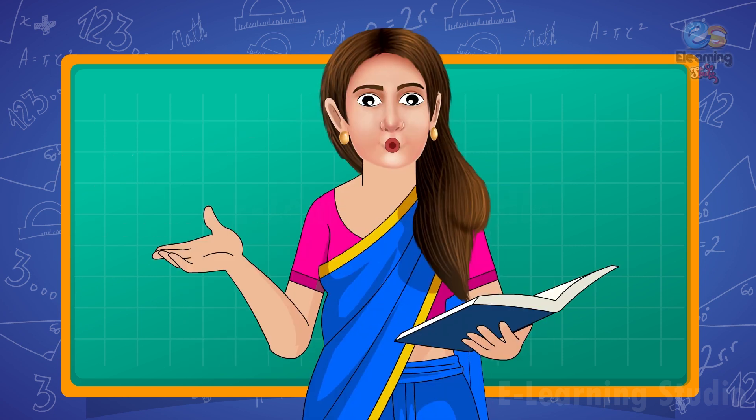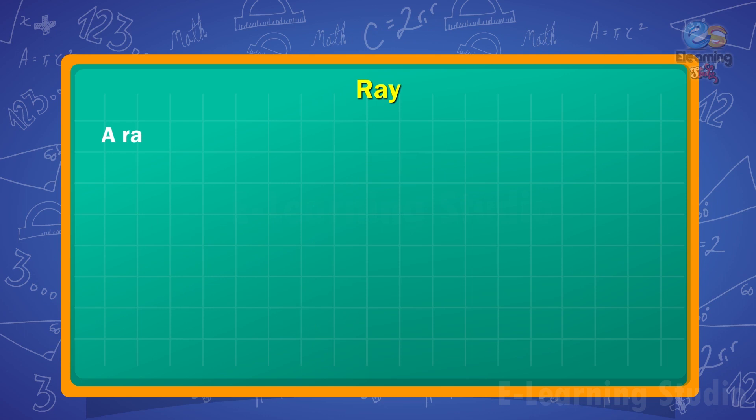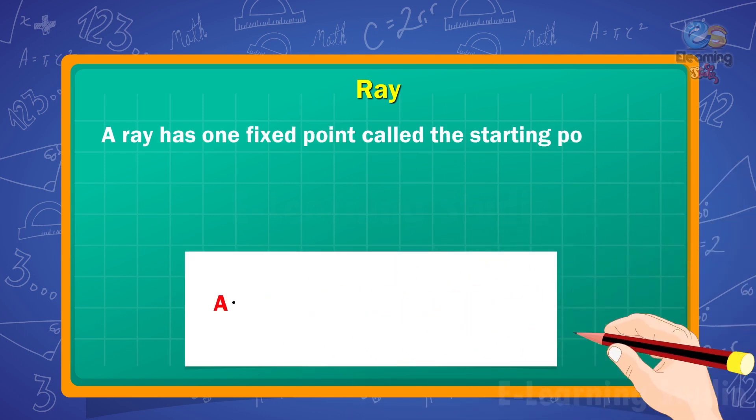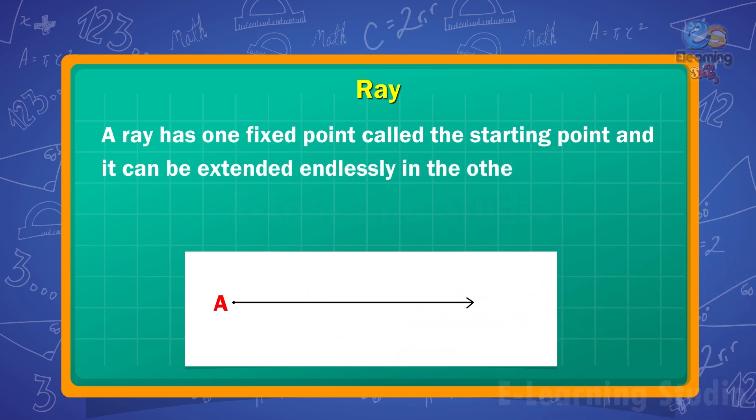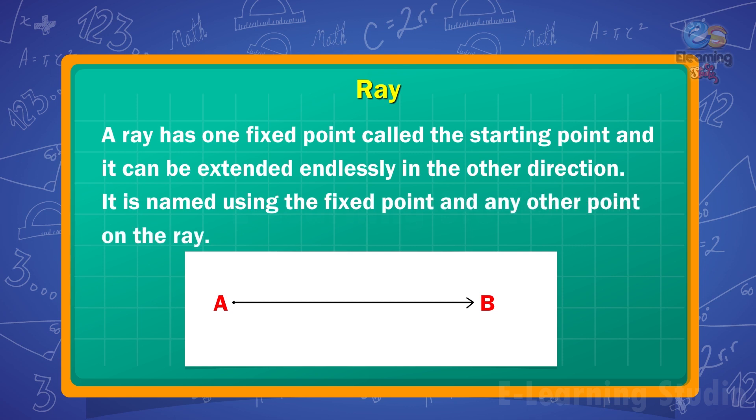Children, now next is ray. A ray has one fixed point called the starting point and it can be extended endlessly in the other direction. It is named using the fixed point and any other point on the ray. In the given figure, the point A is fixed but we can extend the ray indefinitely along B. It is named as AB, the ray AB. It can also be extended beyond the page.